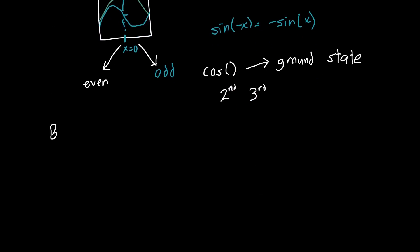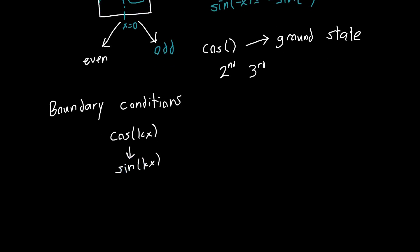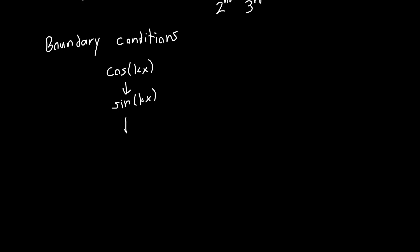Well initially when we applied our boundary conditions we assumed that we had a cosine of kx, we differentiated that, we got a sine, and then we divided the two equations by each other and we ended up with a tangent.